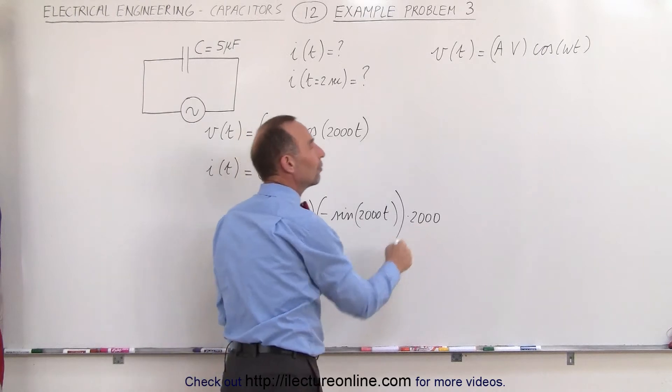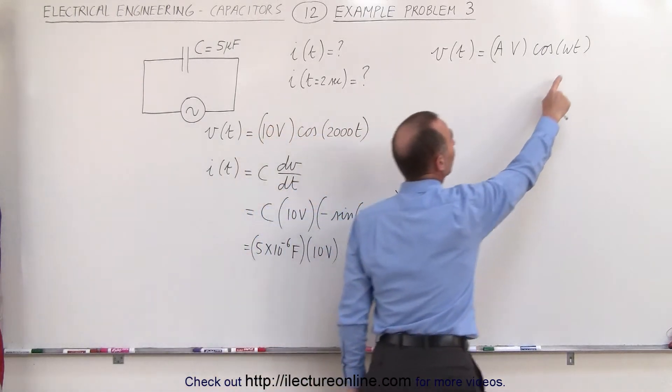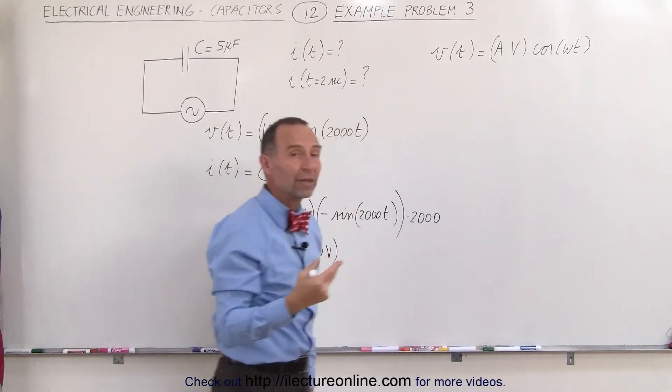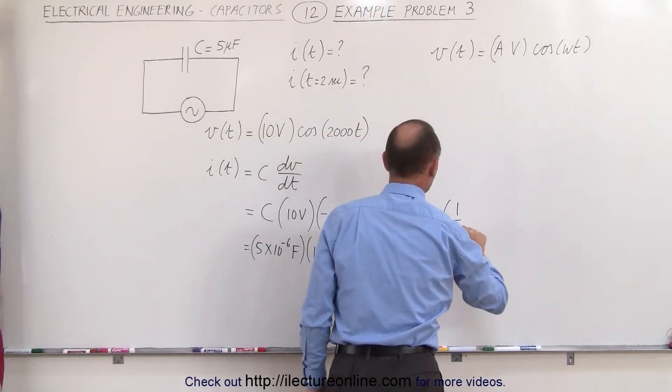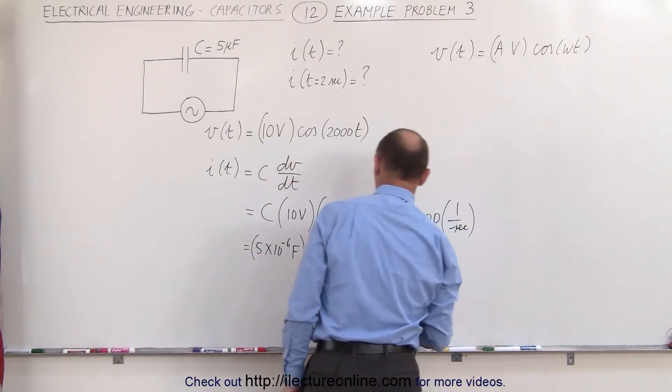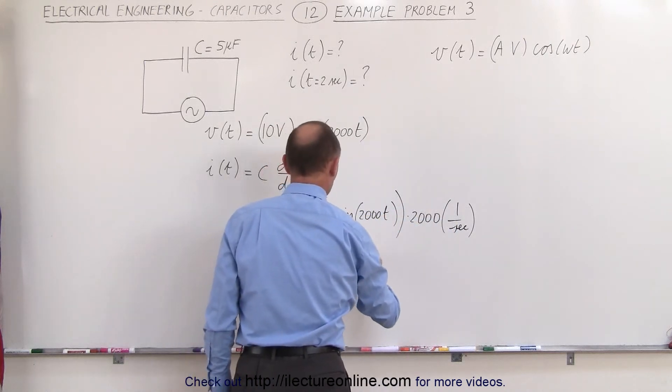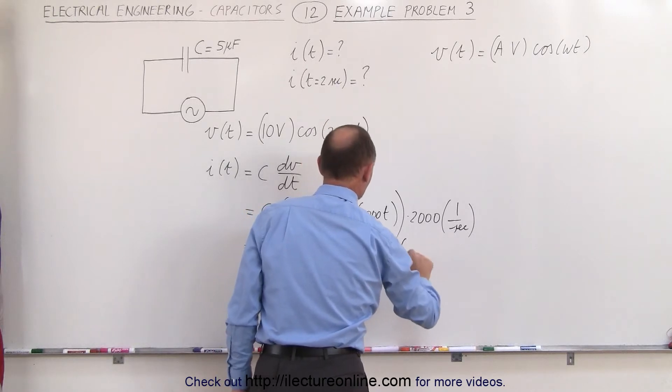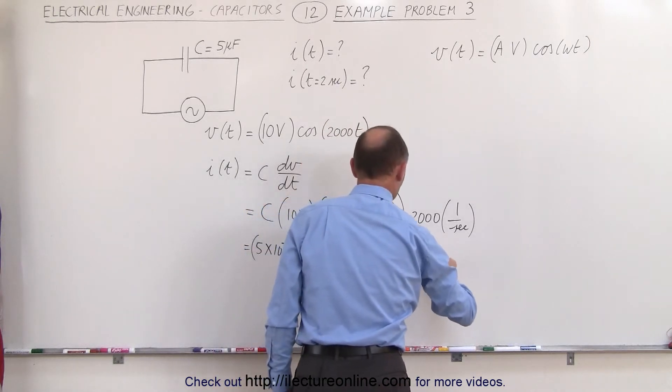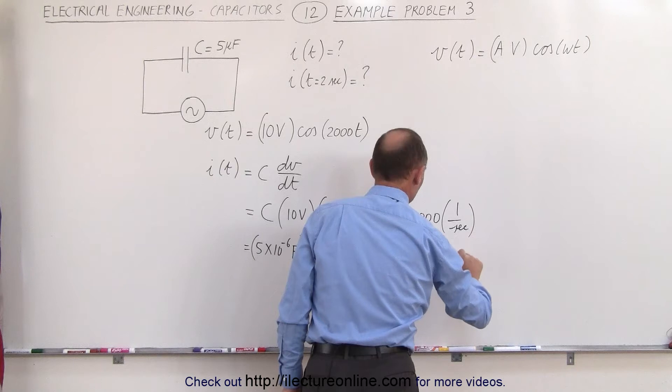Now the units of this—remember this was the angular frequency—the units for angular frequency is 1 over seconds, so we have to put 1 over seconds in here to have the proper units. So we multiply this times 2000 times 1 over seconds, times the negative sine of 2000t.